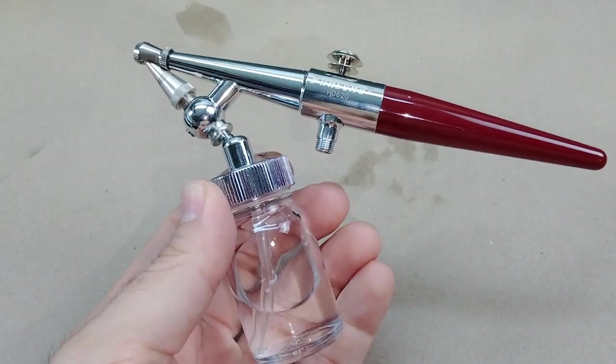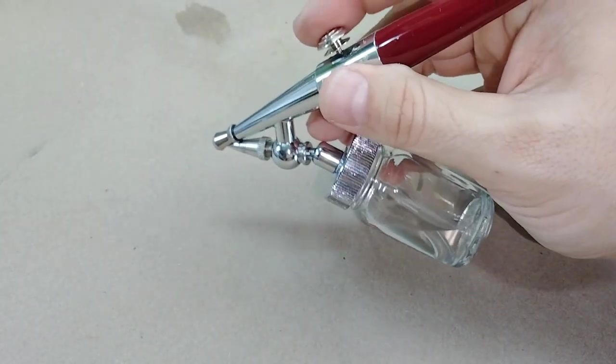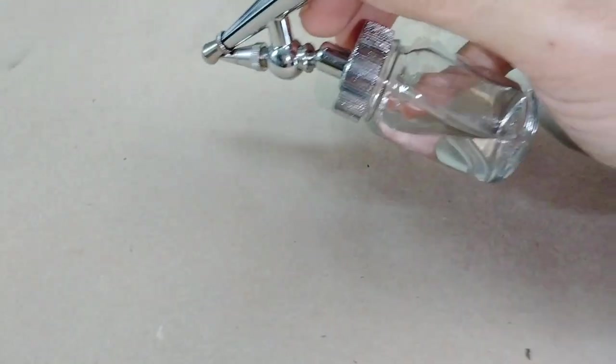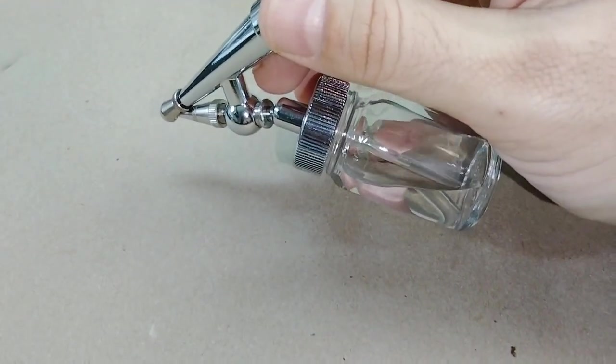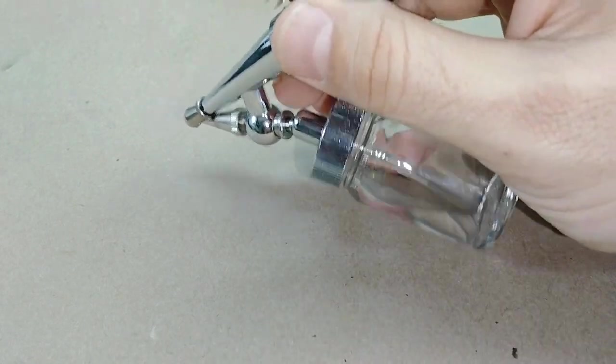The straw inside the bottle that's drawing the paint up, if it's at an angle that it's not allowing it to get submerged into the paint, it's no longer going to be able to spray that paint. So that's something that you have to play with the tilt and the angle of the bottle and adjust as necessary.